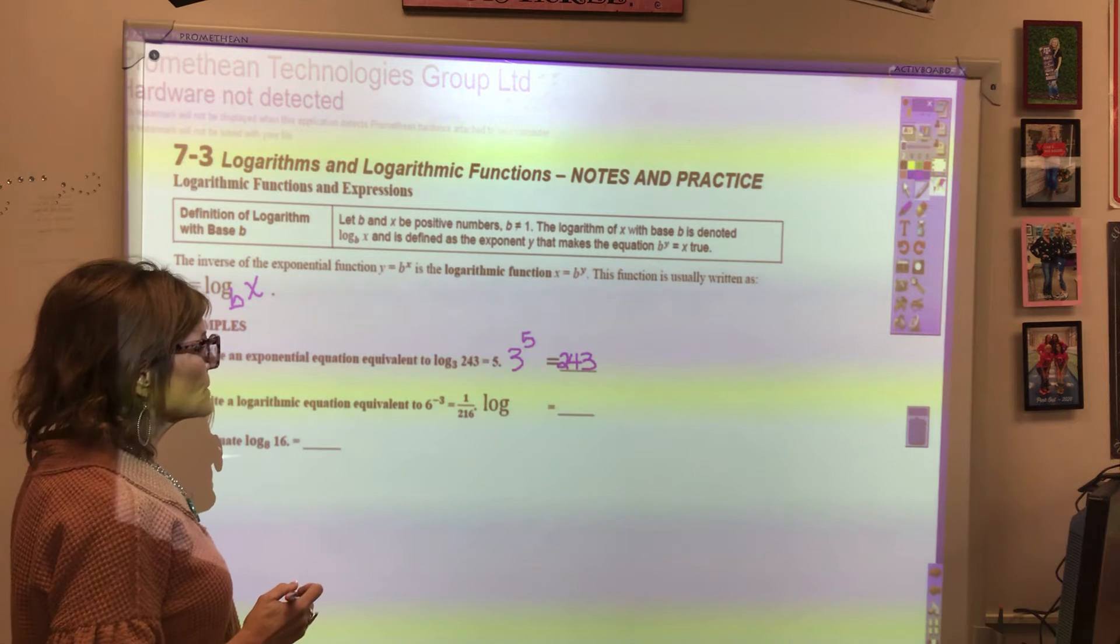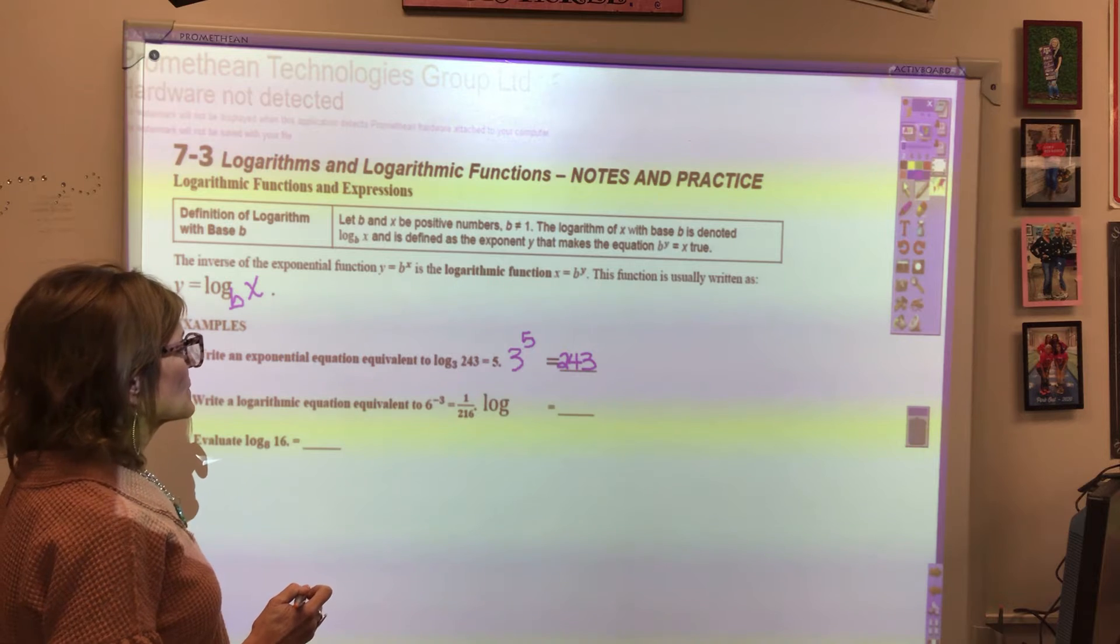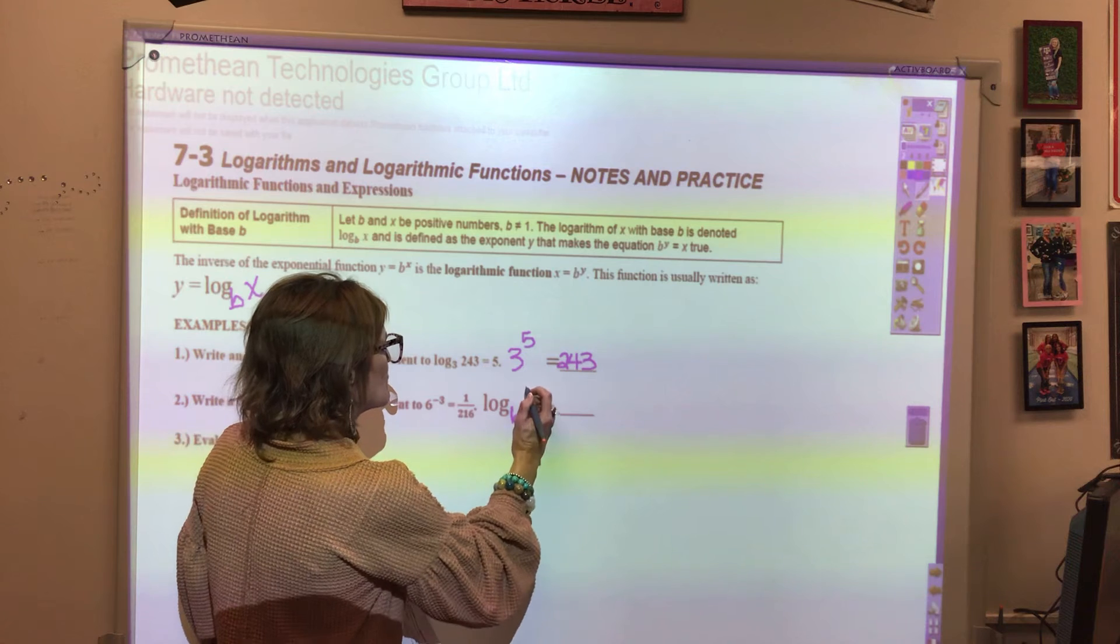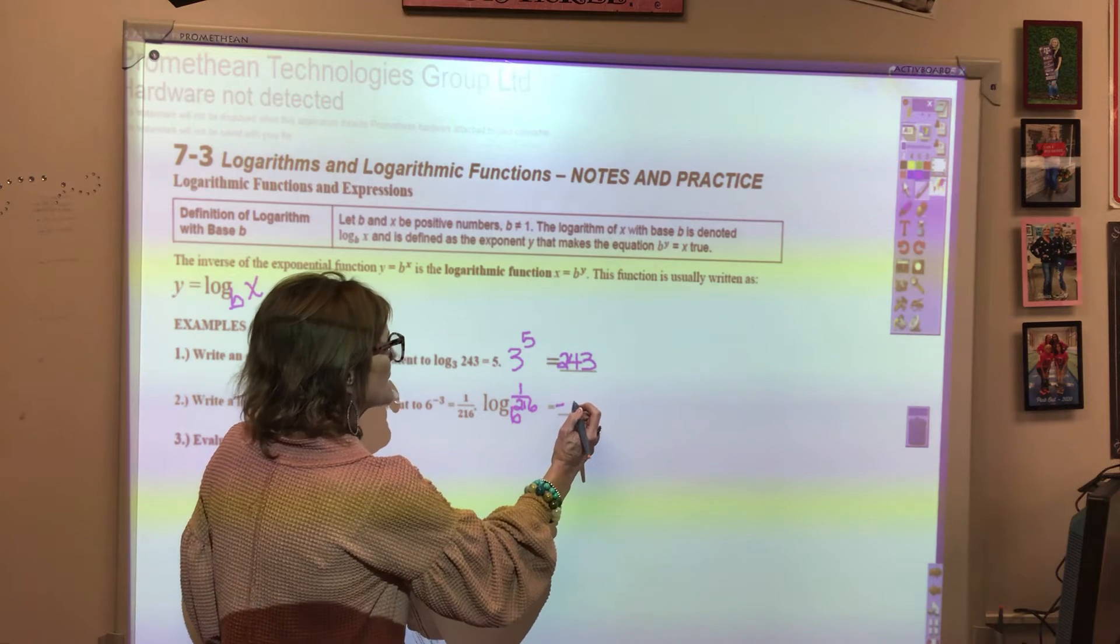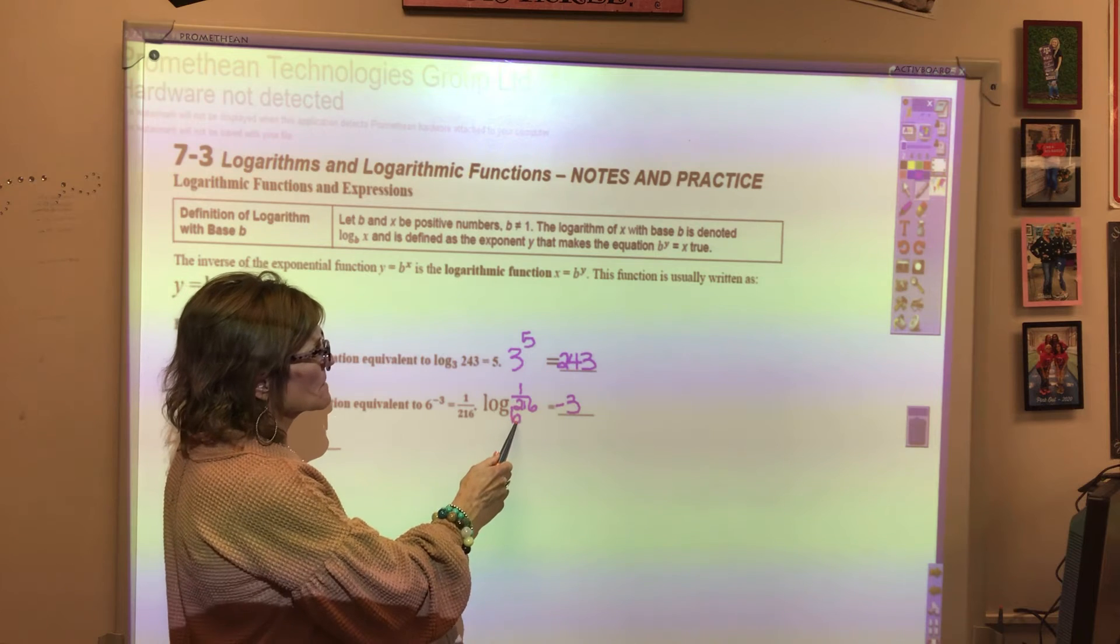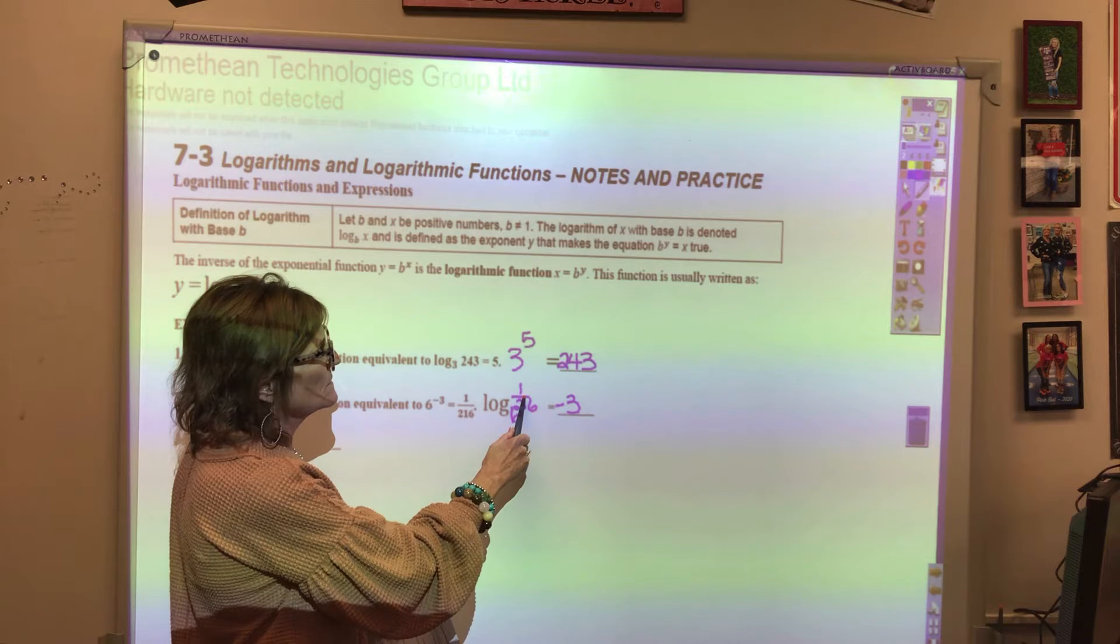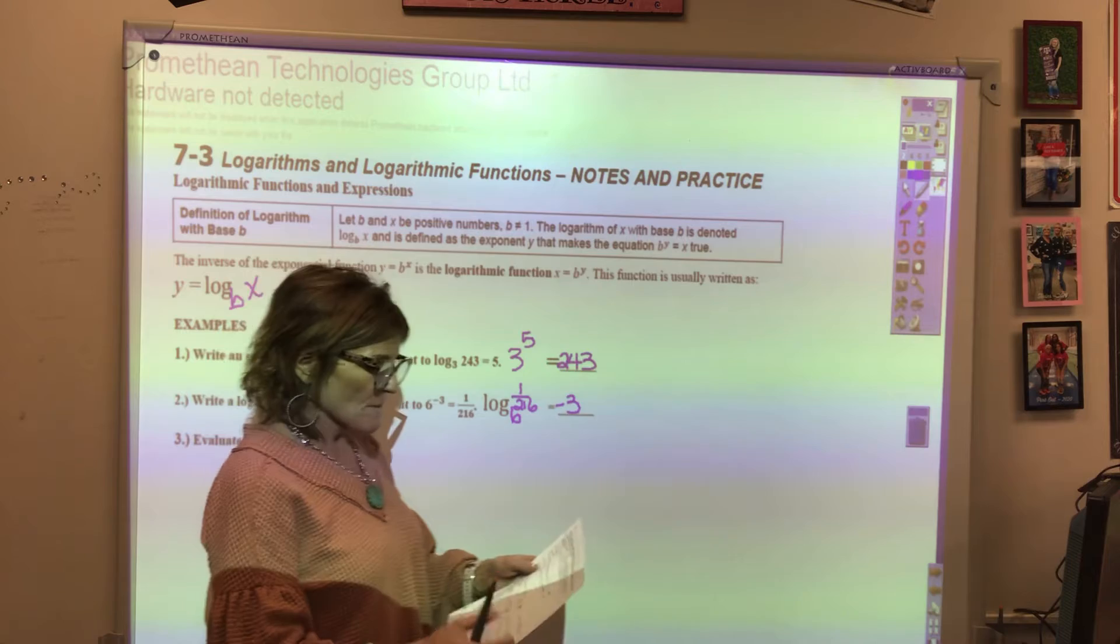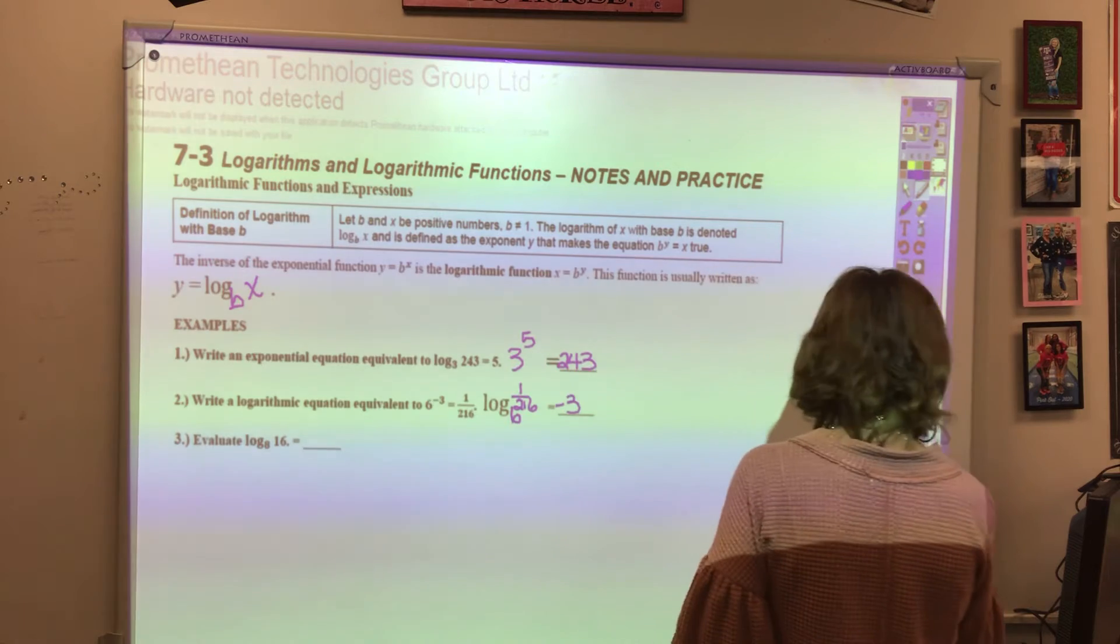Now to go backwards, what we're going to do is we're going to write log base 6 of 1 over 216 equals negative 3. So this is the base, this is the power, this is the answer. Base, power, answer. I'm going to write these out. I didn't put them on a slide, so let me write them out as we go along.